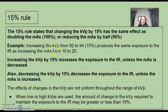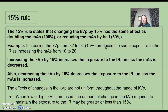Here's an example. If you increase the KVP from 82 to 94, which is a 15% increase, that will produce the same exposure to the image receptor as if you increase the mAs from 10 to 20 — as if you doubled the mAs. So increasing the KVP by 15% increases the exposure to the IR unless you decrease the mAs to counteract it.